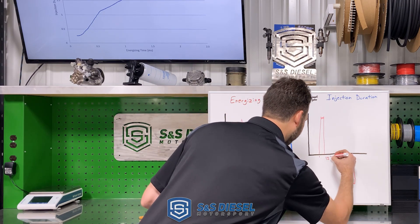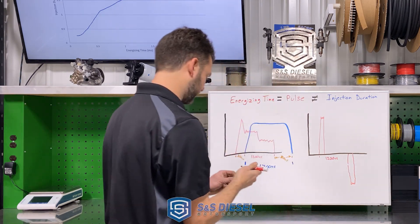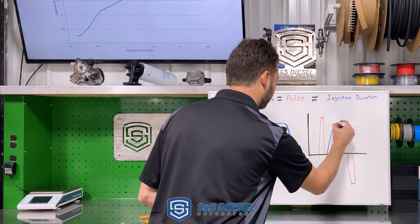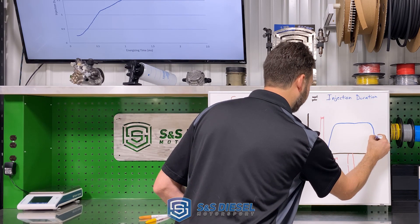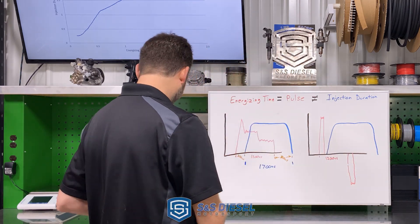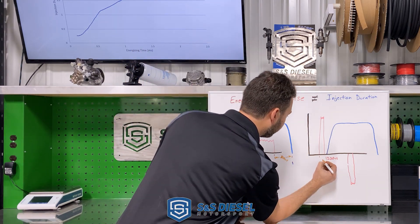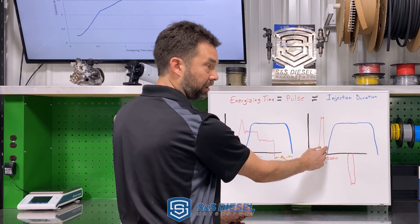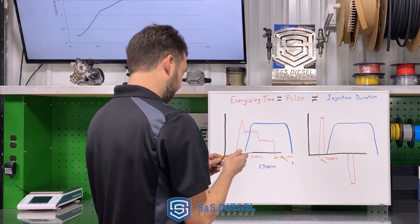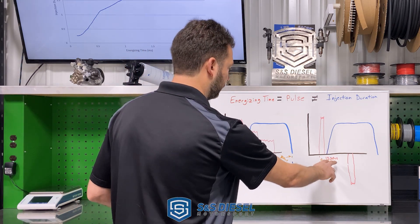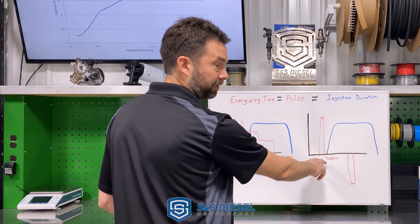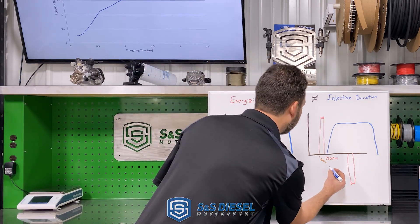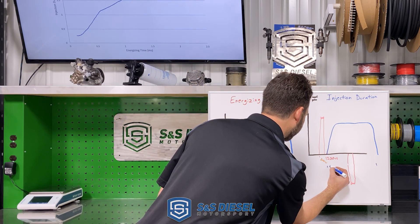We use the same energizing time here, 1,200 microseconds. So on this, our injector delay is a little bit less for opening, but our end of injection is significantly longer. For a Piezo injector, you're going to be roughly 200 microseconds for the start of energizing to start of injection. But then your end of injection is going to be your 1,200 microseconds minus your 200 times 2. So in this case, it's going to be roughly 2,000 microseconds of injection duration.